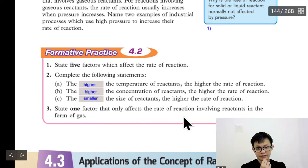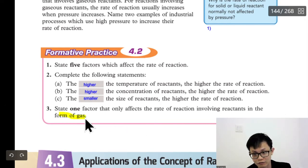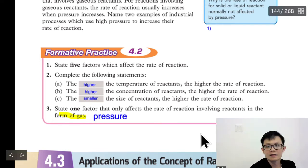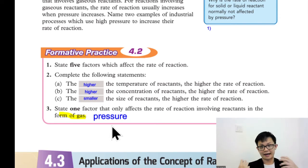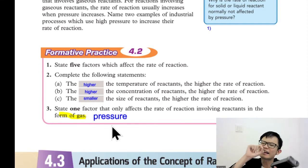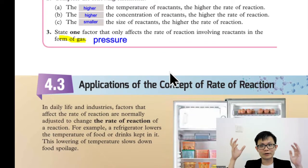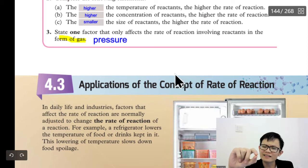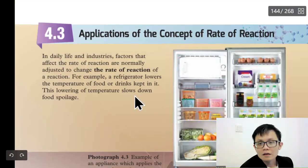Next question: state one factor that only affects the rate of reaction involving reactants in the form of gas. As we discussed, the answer is pressure — because you can compress gas molecules closer together, increasing reaction rate. For solids, you can't really compress them unless you bring in a black hole to compress the earth into a tiny dot!